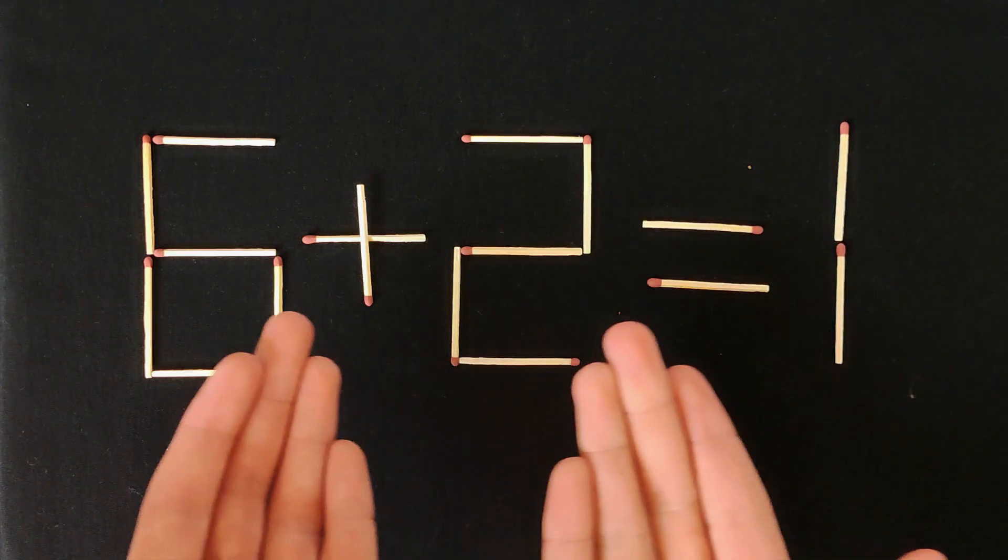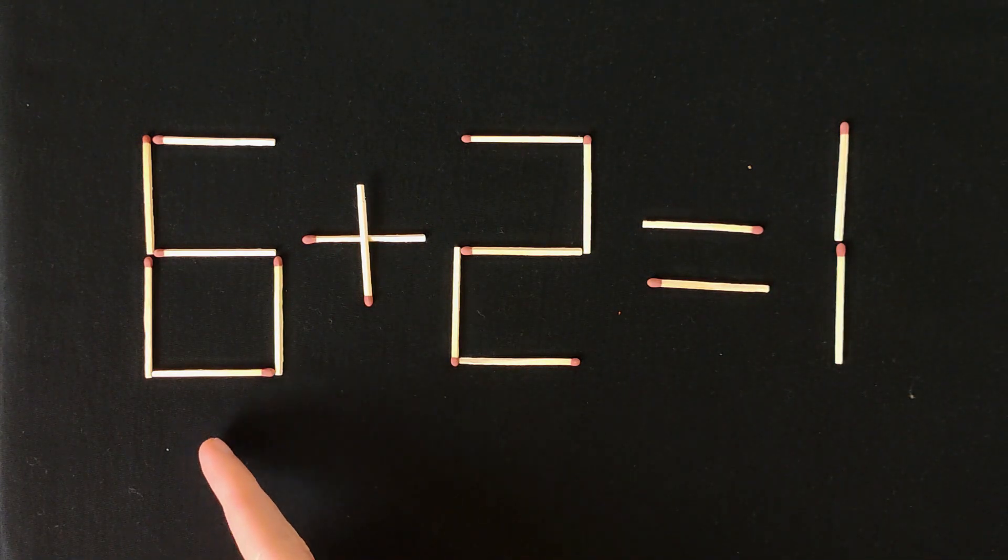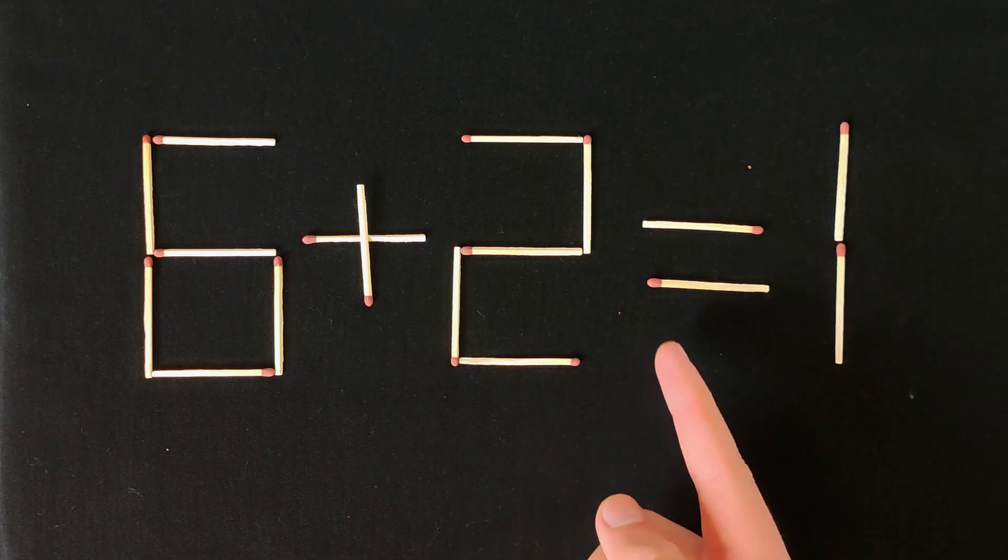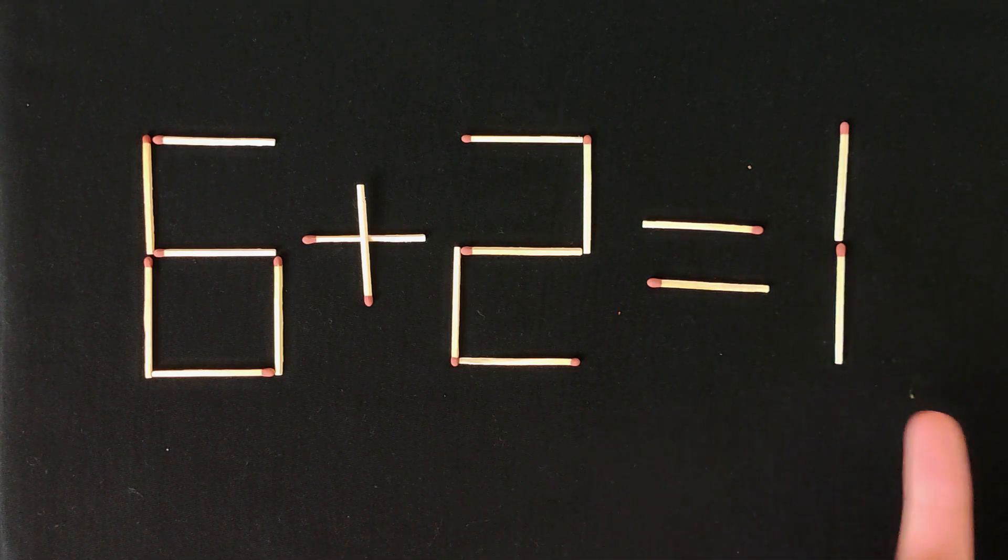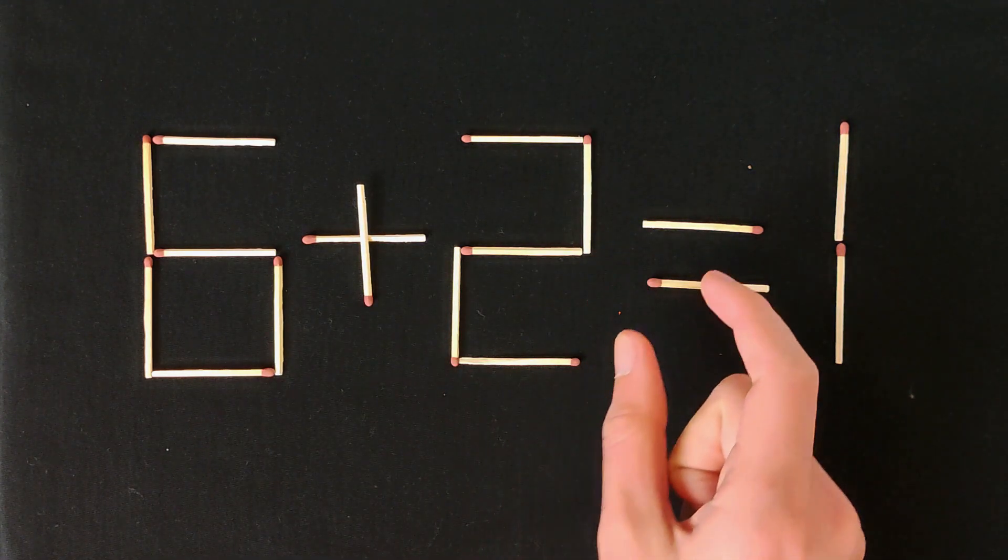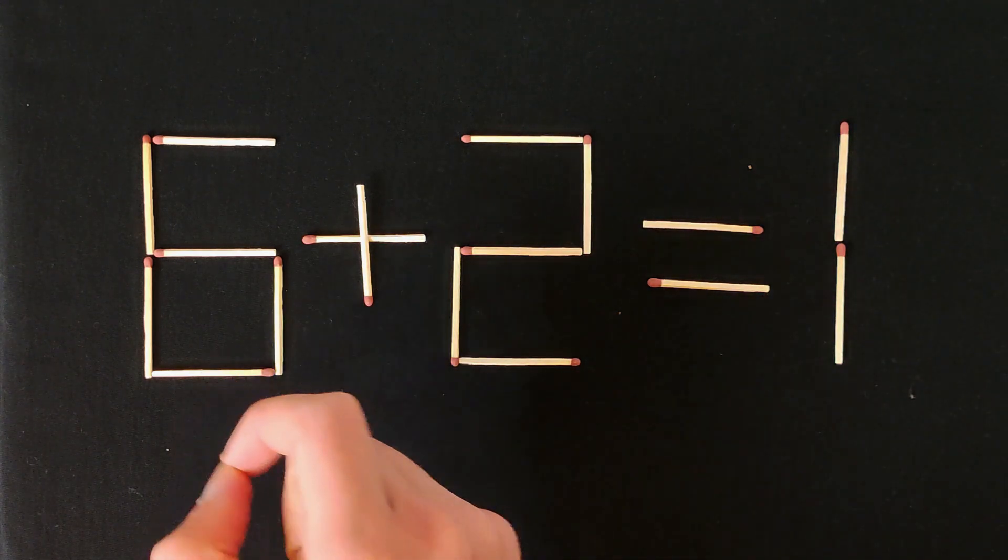Hi everybody, today we have a puzzle like this. 6 plus 2 equals 1. That's wrong equation. We need to rearrange one match so that this equation is correct.